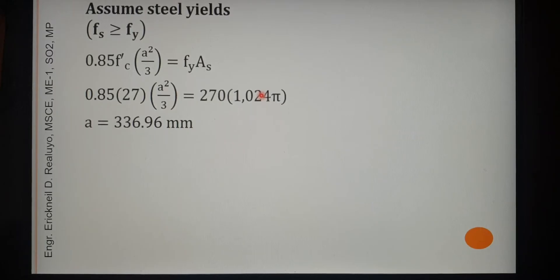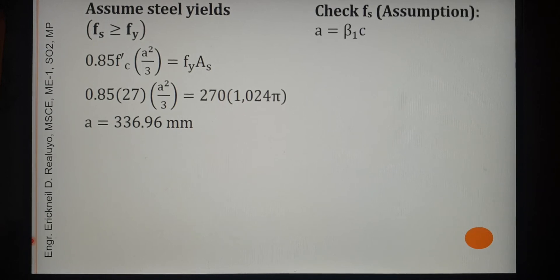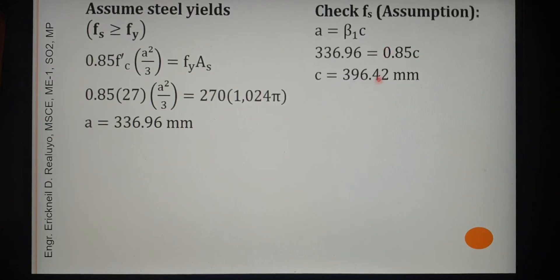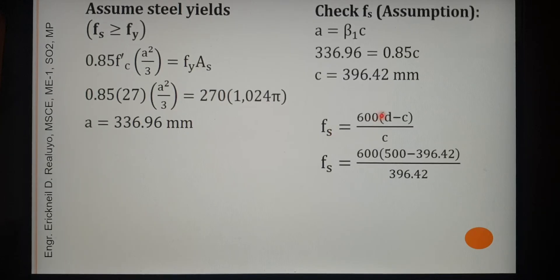To check the assumption, we need to get the true value of FS. Using the neutral axis depth C from the NSCP provisions — beta₁ remains 0.85 since F′c does not exceed 28 MPa — we compute C. Then using the FS formula derived from the strain diagram and substituting all values including D, we get FS equal to 156.77 MPa.